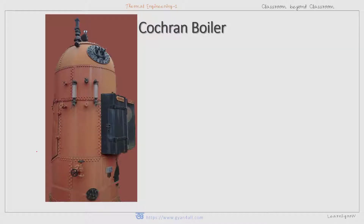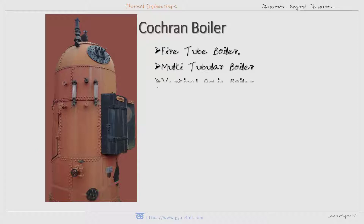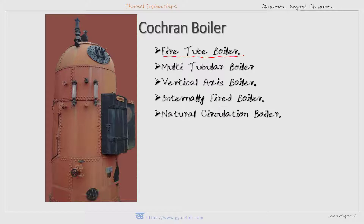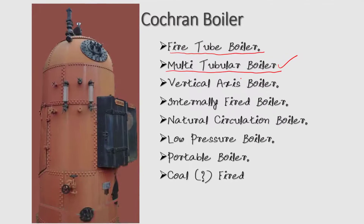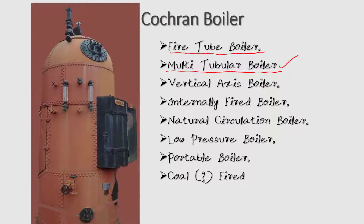Let us understand the Cochrane boiler from the point of view of classification. The Cochrane boiler is a fire tube boiler. It is a multi-tubular boiler — the simple vertical boiler is a single tube boiler, but the Cochrane is its modification, so it is multi-tubular. The axis is vertical, so this is a vertical axis boiler, and it is an internally fired boiler.